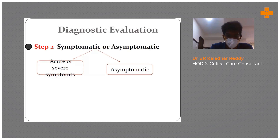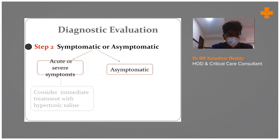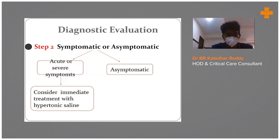As an example: if serum sodium is 118 and glucose is 500, the adjusted sodium comes out to around 128 — so there may be no need to actively correct the sodium. Next, step two: determine whether the hypotonic hyponatremia is symptomatic or asymptomatic. If acute with severe symptoms, consider immediate treatment with hypertonic saline.